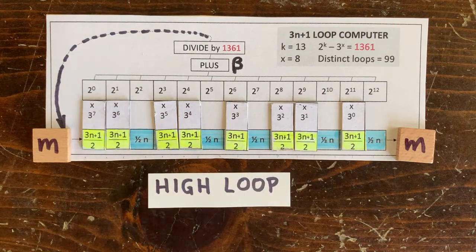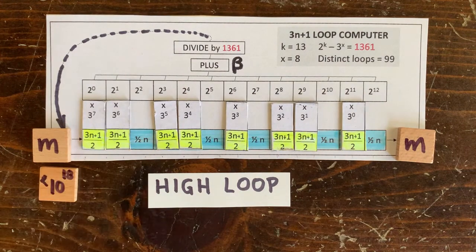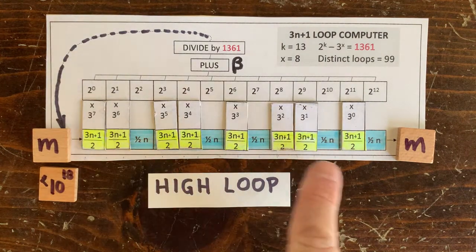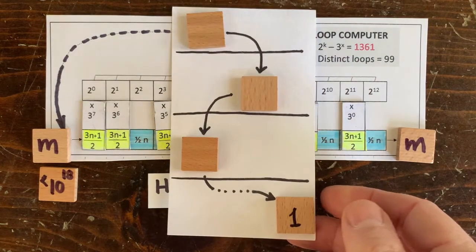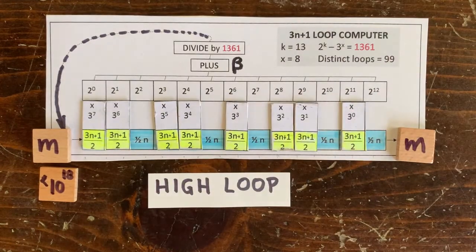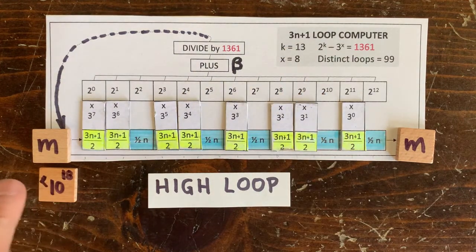If the bottom member of the high loop is less than a billion billion, then we know that not just this loop, but every loop of length k involves some member less than a billion billion. So none of them are integer loops. We want to know what loop length k is the first one that admits even the possibility of an integer loop.